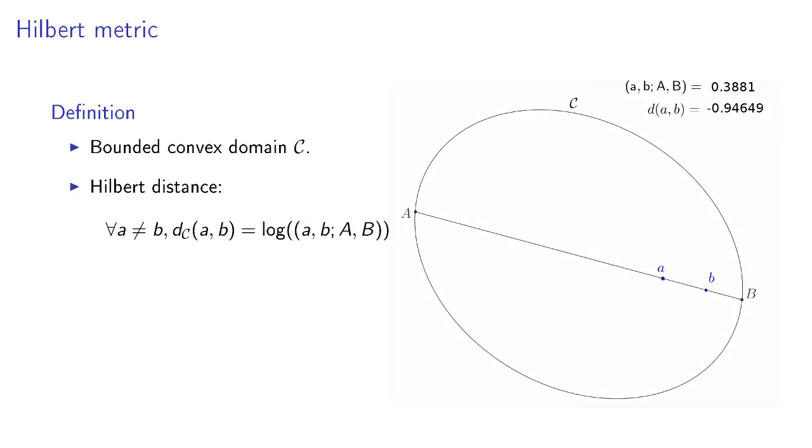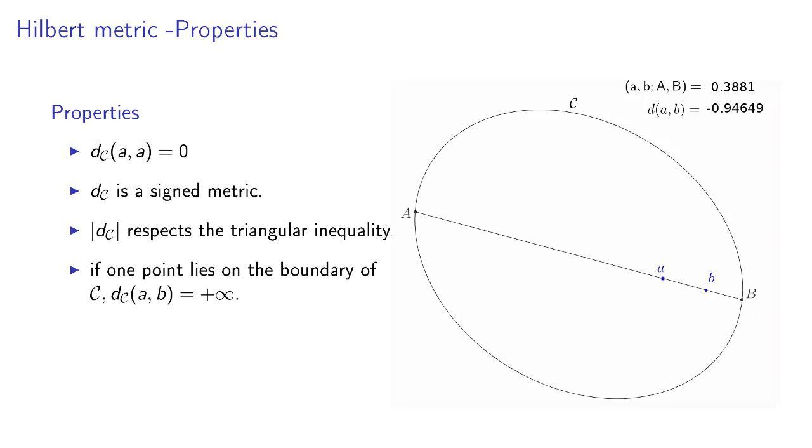In a Hilbert geometry, considering two distinct points A and B inside the bounded convex domain C, we consider the intersection points of the domain boundary with the line AB. The Hilbert distance is then defined using the logarithm of the cross-ratio of the four points considered on the figure. This distance is extended so that two identical points have a distance of zero between them. It is also a signed metric that respects the triangular inequality. The boundary of the convex polygonal domain represents the line at infinity for this metric.